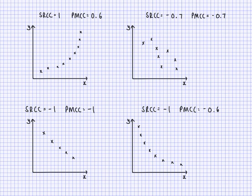A plot where every step goes right and down gives SRCC of negative 1, and if all those points fall exactly on a straight line, PMCC is also negative 1. A final plot going right and down throughout gives SRCC of negative 1, but PMCC of only around negative 0.6 because the points don't fall on a straight line — they show a downward trend but not a perfectly linear one.